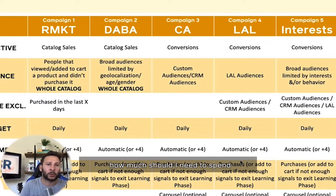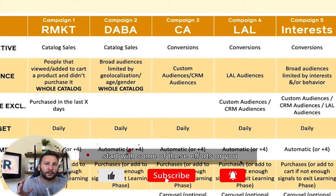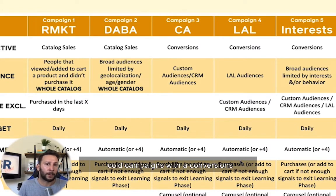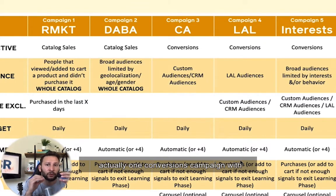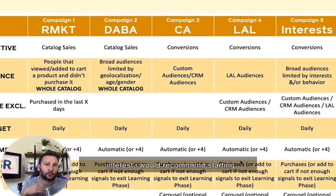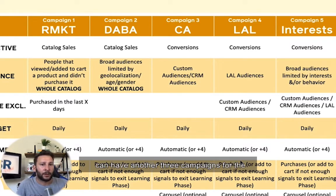Now you may say, how much do I need to spend for having a structure like five campaigns? That's why I said you can start with some of these or you can even merge some of them. For instance, you have two cold campaigns with a conversions objective, so you can have one conversions campaign with two ad sets — interests in one ad set and lookalikes in the other. I would recommend starting small and then you can always expand. You can have one conversions campaign, CBO, lookalike in one ad set, interest in the other ad set, and then another three campaigns for the warm audiences and the catalog campaigns.